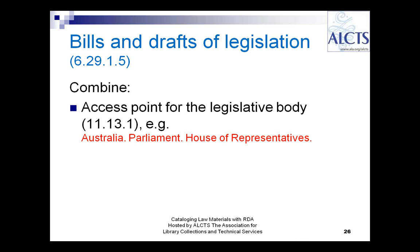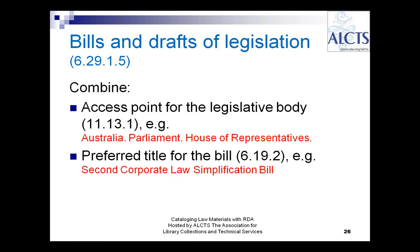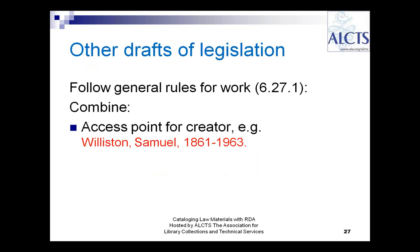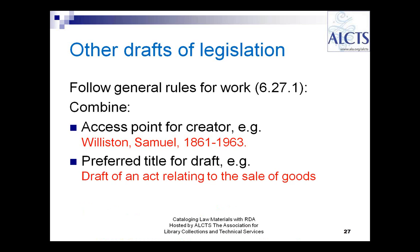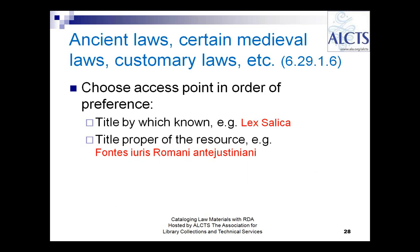For bills and drafts of legislation, you start with the access point for the legislative body where the bill was entered, and you add the preferred title for the bill. For other drafts of legislation that have not been entered as a bill in the legislature, you combine the access point for the creator — in this case a person — and add the preferred title for that draft. For ancient laws, medieval laws, and customary laws, we have the same rule as under AACR2: you choose the title by which the law is known, or the title proper of the resource.